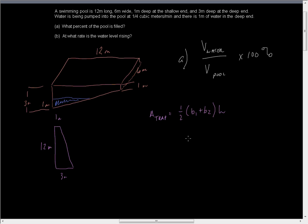For us this is going to be one half times (one plus three), which is four, times twelve. So we get 48 over 2, which is 24. That's 24 square meters.